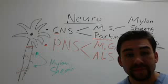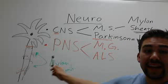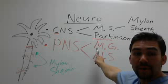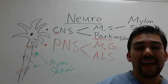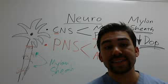That's the overview of decreased dopamine in Parkinson's. Next, we'll go into myasthenia gravis and Lou Gehrig's disease in the next video.